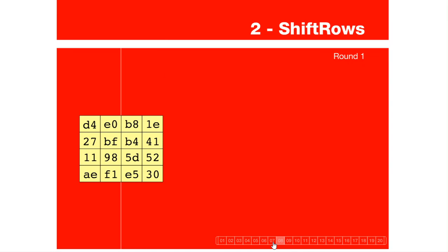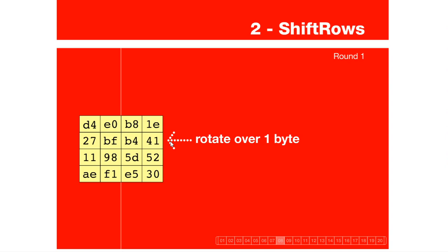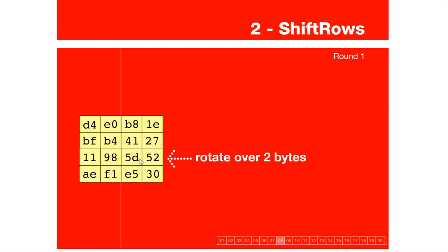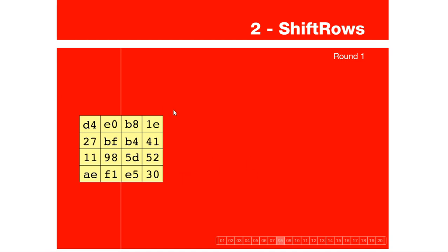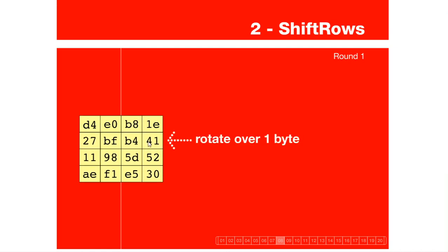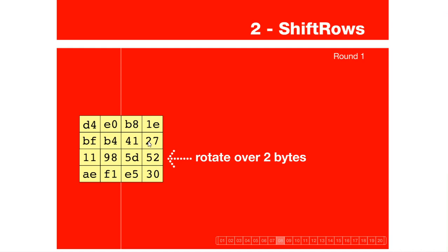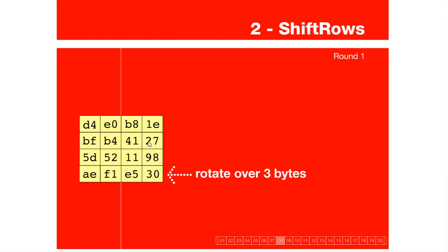The second operation is shift rows — very simple. The first row is left intact. The second row is rotated by one byte. The third row is rotated by two bytes. And the fourth row is rotated by three bytes. Remember how we shuffled answer sheets while evaluating the first assignment in class? The first row is left intact, the second row is left circular shifted one byte, the third row is left circular shifted two bytes, and the fourth row is left circular shifted three bytes. So shift rows is a left circular shift in a particular fashion.